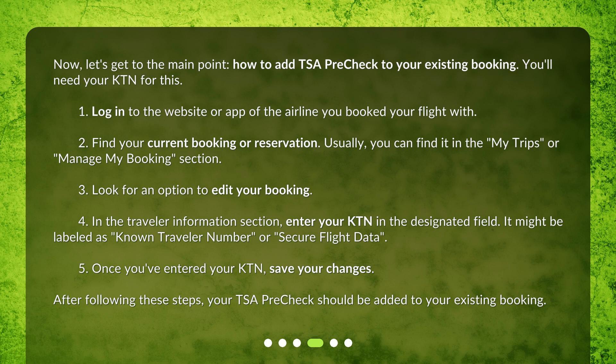Step 3: Look for an option to edit your booking. Step 4: In the Traveler Information section, enter your KTN in the designated field. It might be labeled as 'Known Traveler Number' or 'Secure Flight Data.' Step 5: Once you've entered your KTN, save your changes. After following these steps, your TSA PreCheck should be added to your existing booking.